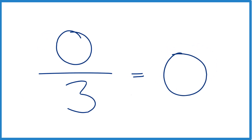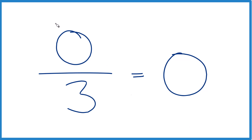Think of it this way. Say you had 3 friends and you had 0 dollars, and you divided your 0 dollars up among your 3 friends. How many dollars would they have? They wouldn't get any from you — they'd get 0. So in answer to our question, 0 divided by 3, or 0 divided by any number except 0, is 0.